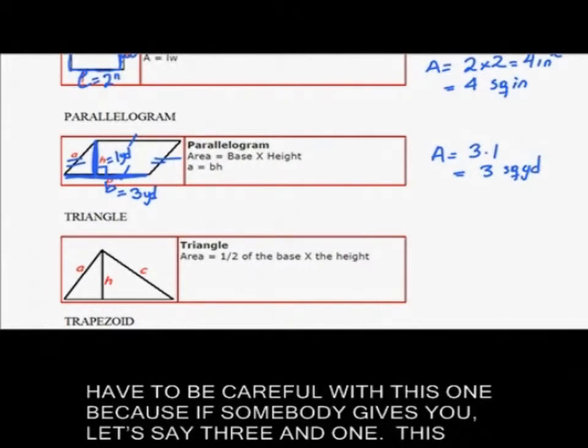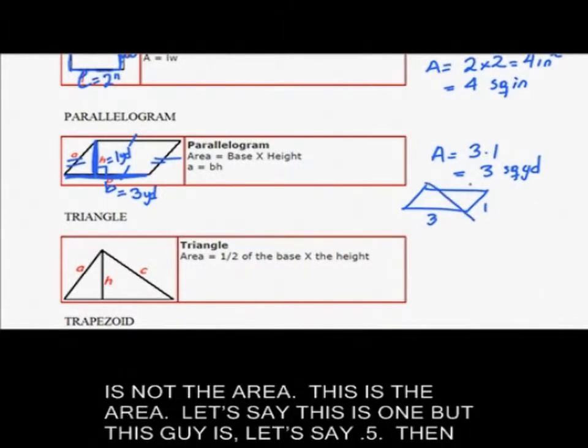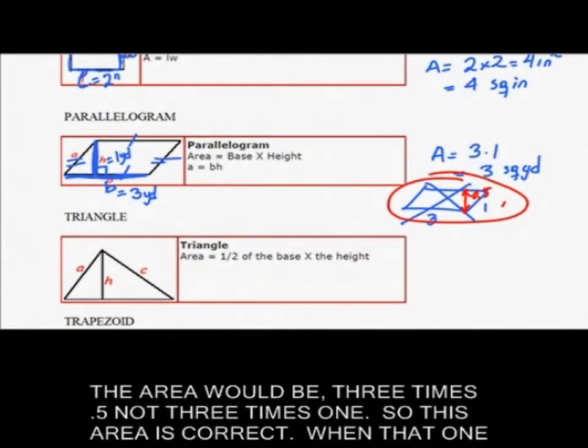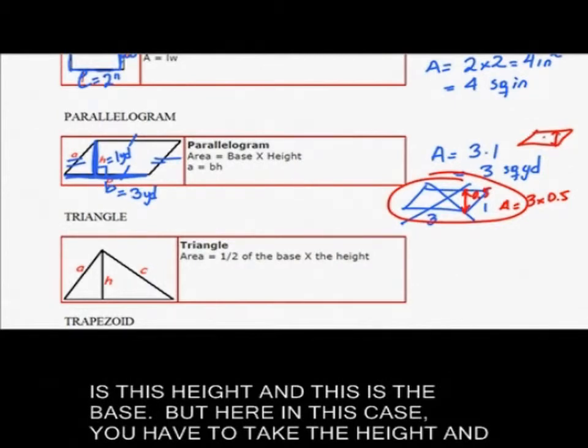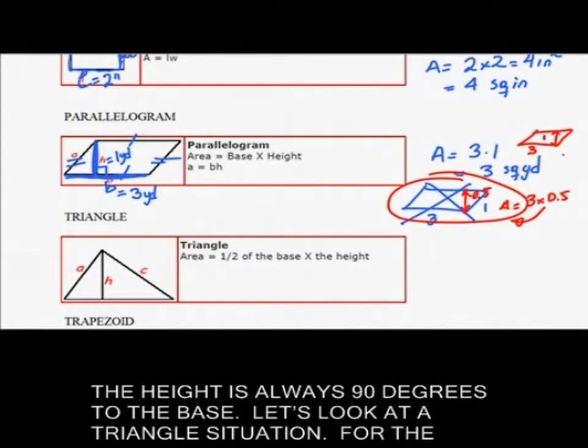Now you have to be careful with this one because if somebody gives you let's say three and one, this is not the area. Let's say this is one but this guy is point five. Then the area would be three times point five, not three times one. You need the base and that one is this height. But here in this case you have to take the height and the height is always 90 degrees to the base.